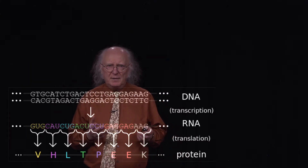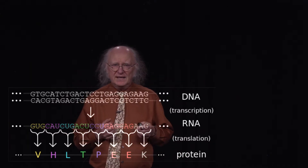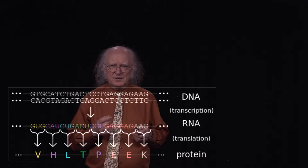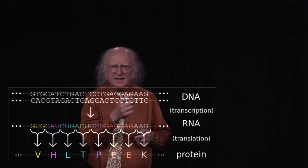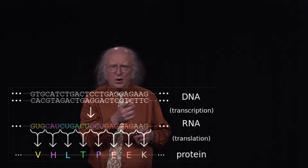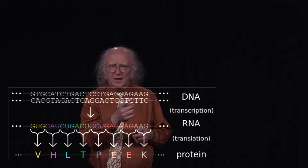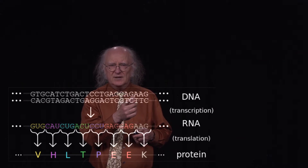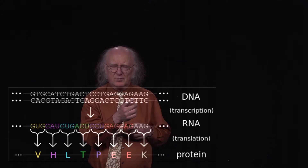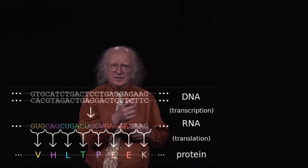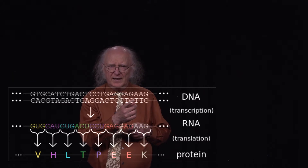RNA is only made from one strand of DNA at a time, and so if we look at this DNA duplex that we see here, the strand of RNA in this case was made by copying the bottom strand of the DNA molecule. That means that each of the two strands of the DNA duplex are different, because they're complementary to each other, and they have different names.